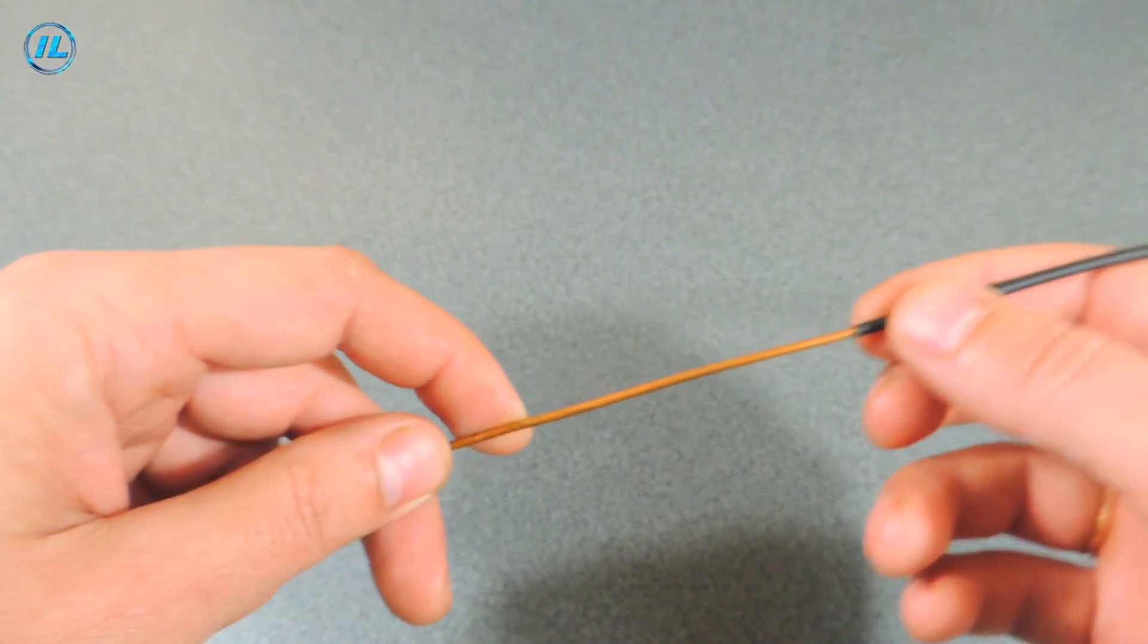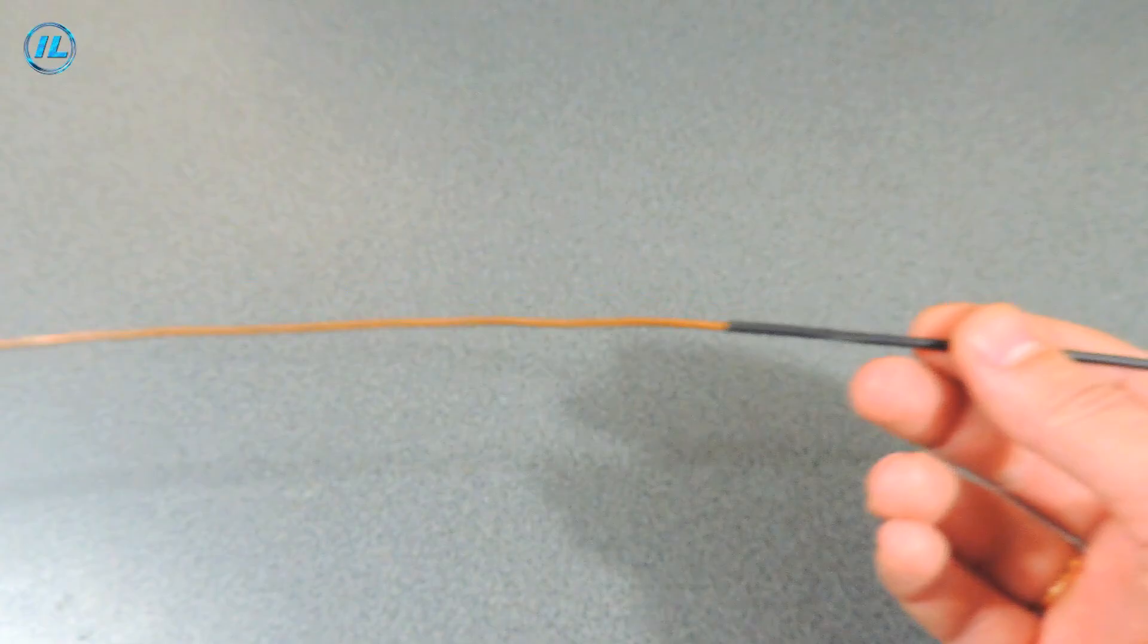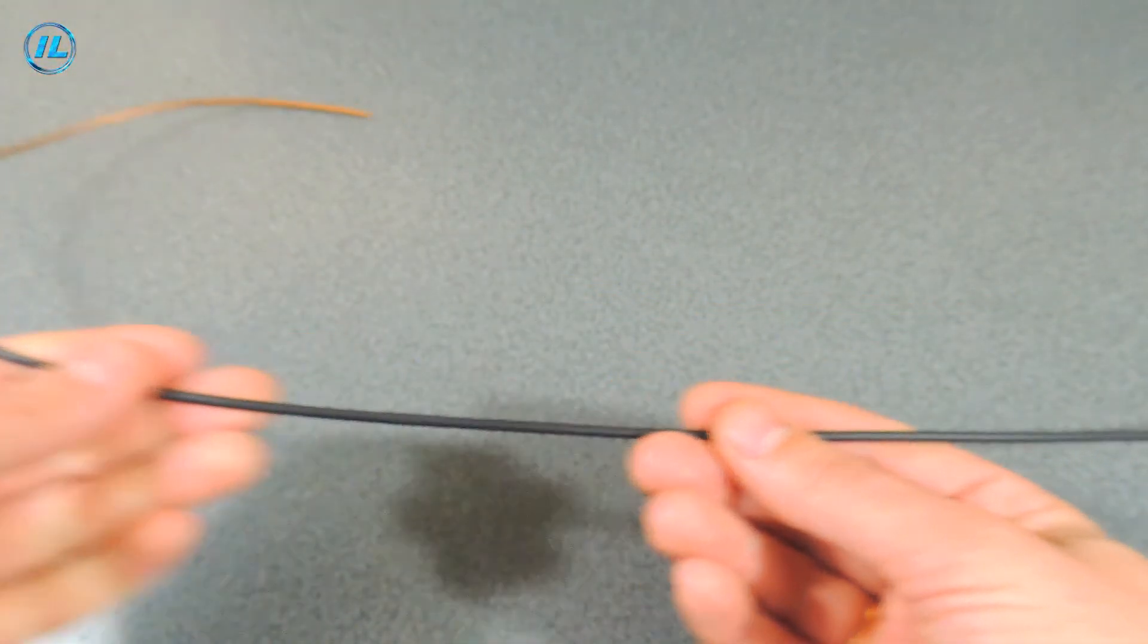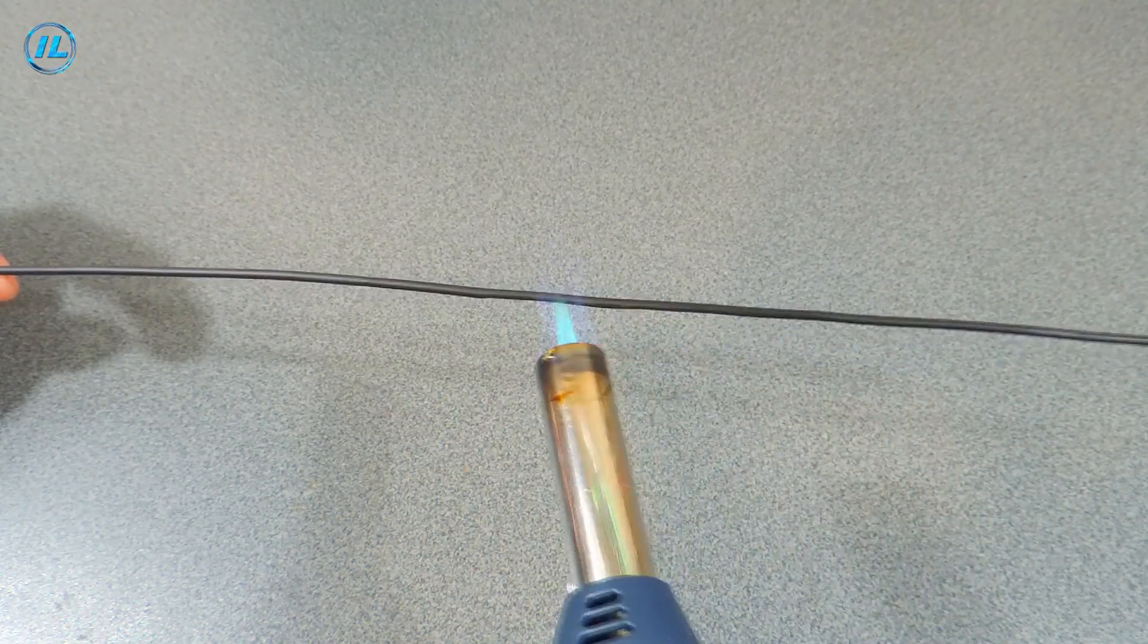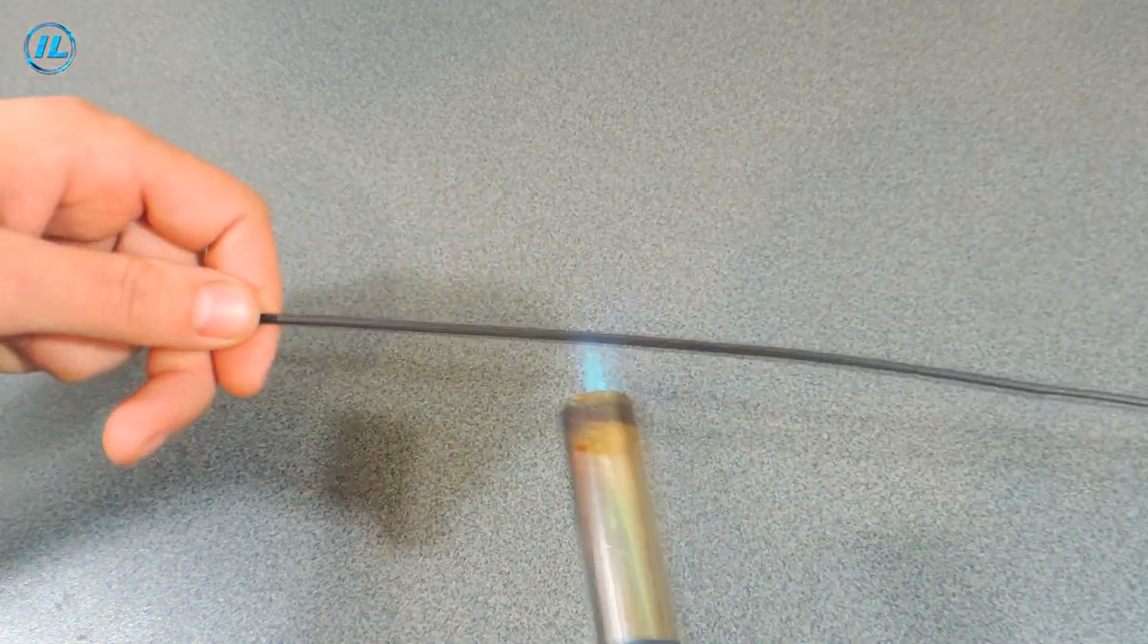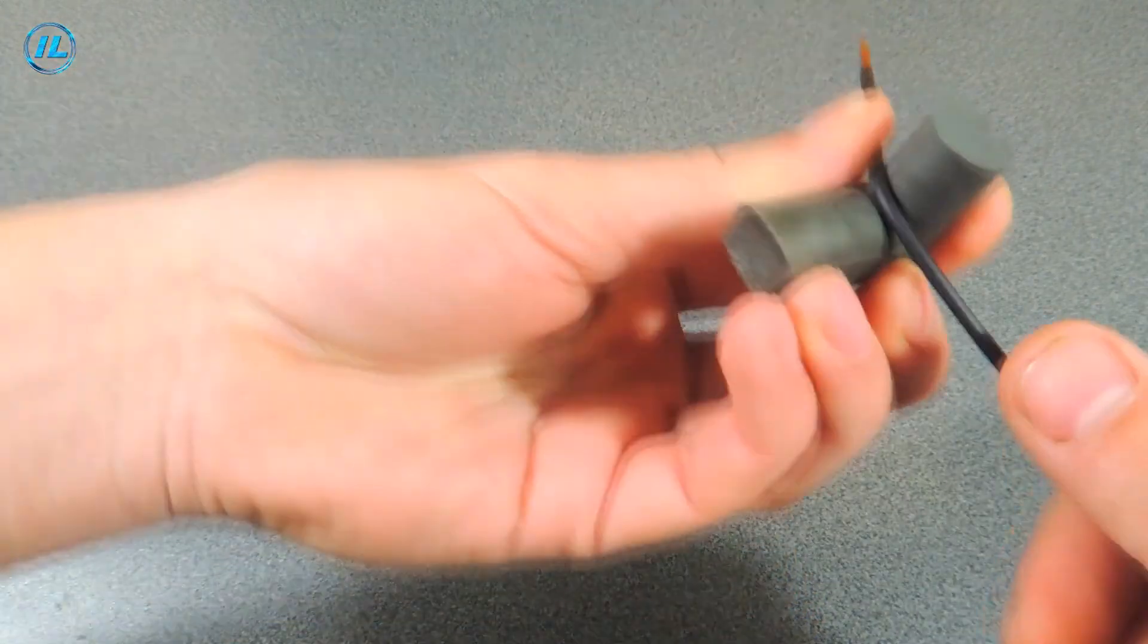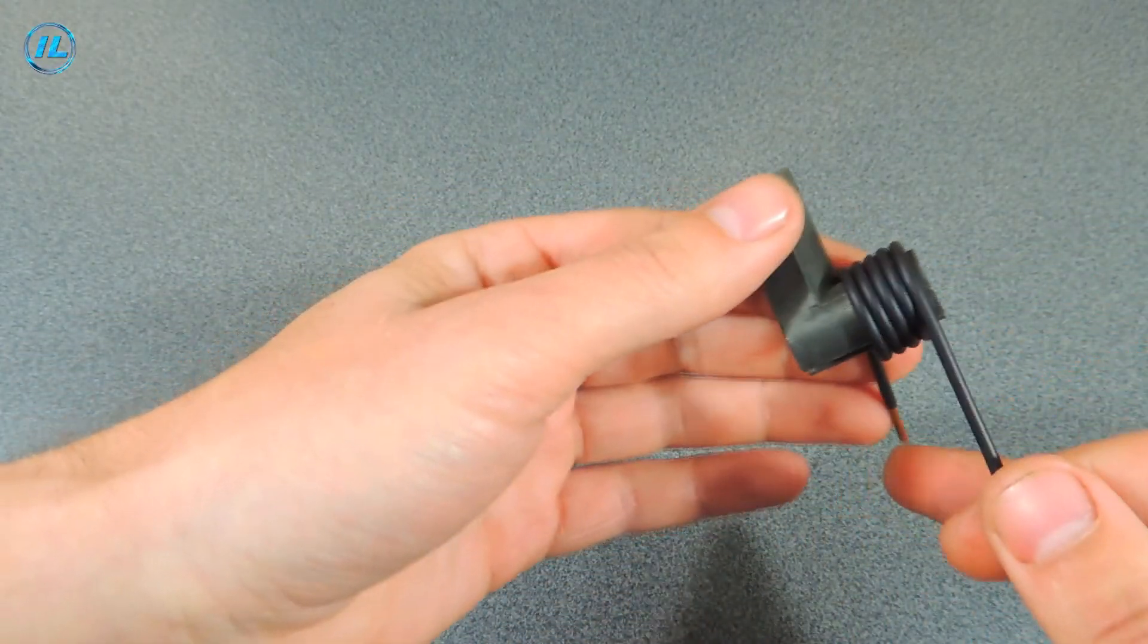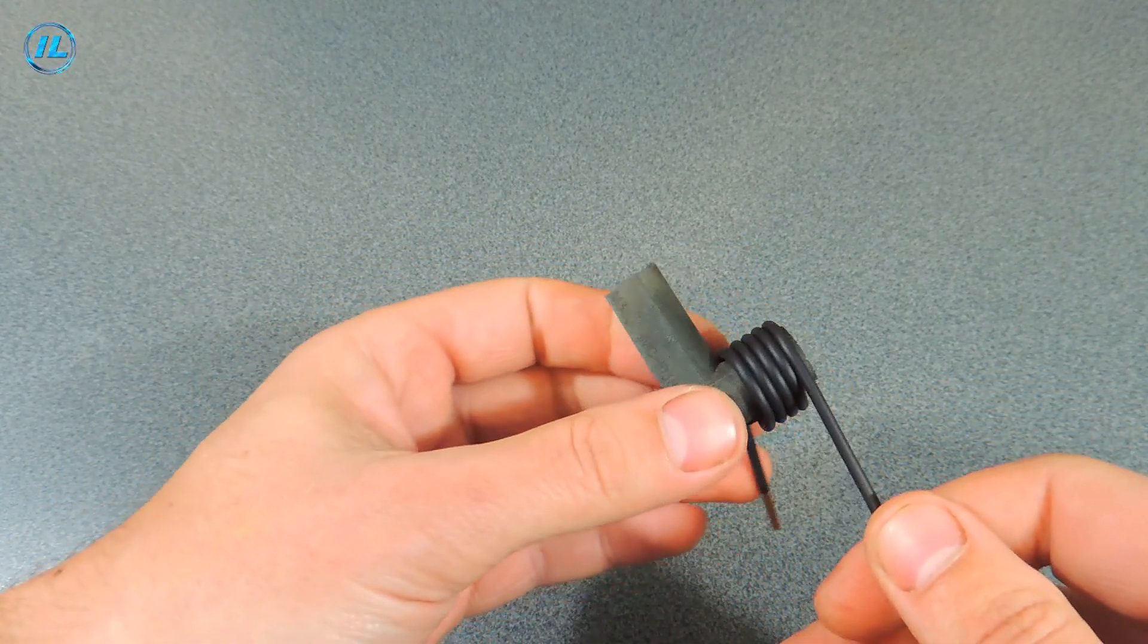So, a shrink tube with a diameter of 3 mm, and it just fits perfectly with this copper tube.